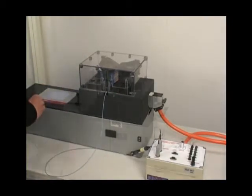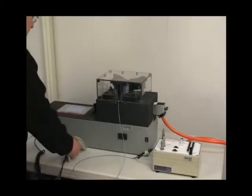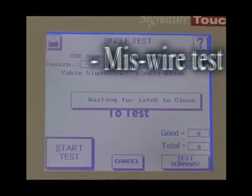A barcode scanner could be used to enter the part number, so the operator doesn't have to enter it by hand each time. In addition to testing for miswires, the TouchOne is performing a four-wire continuity test.